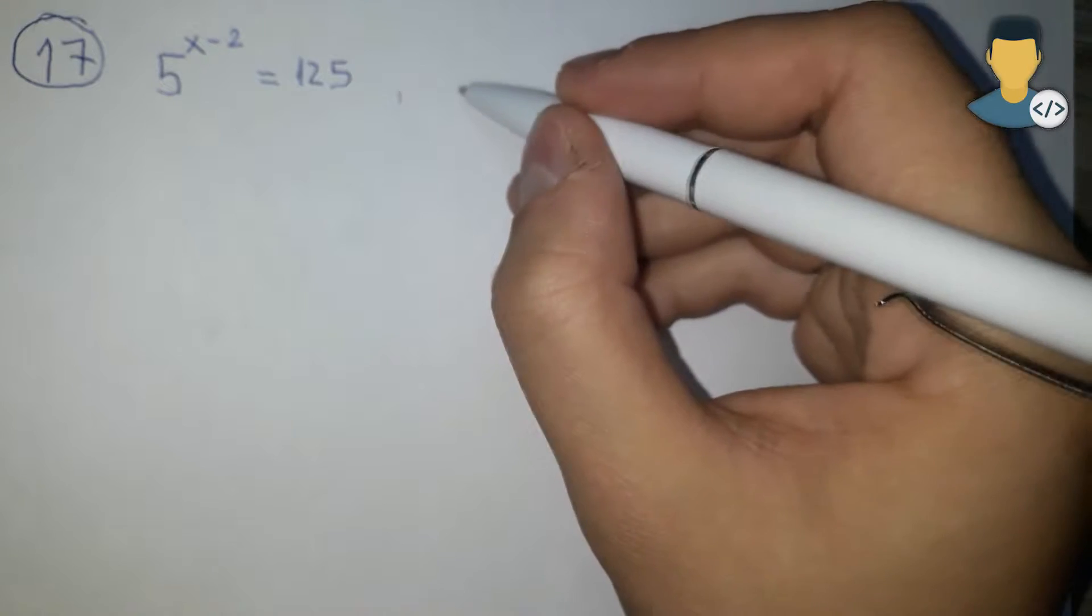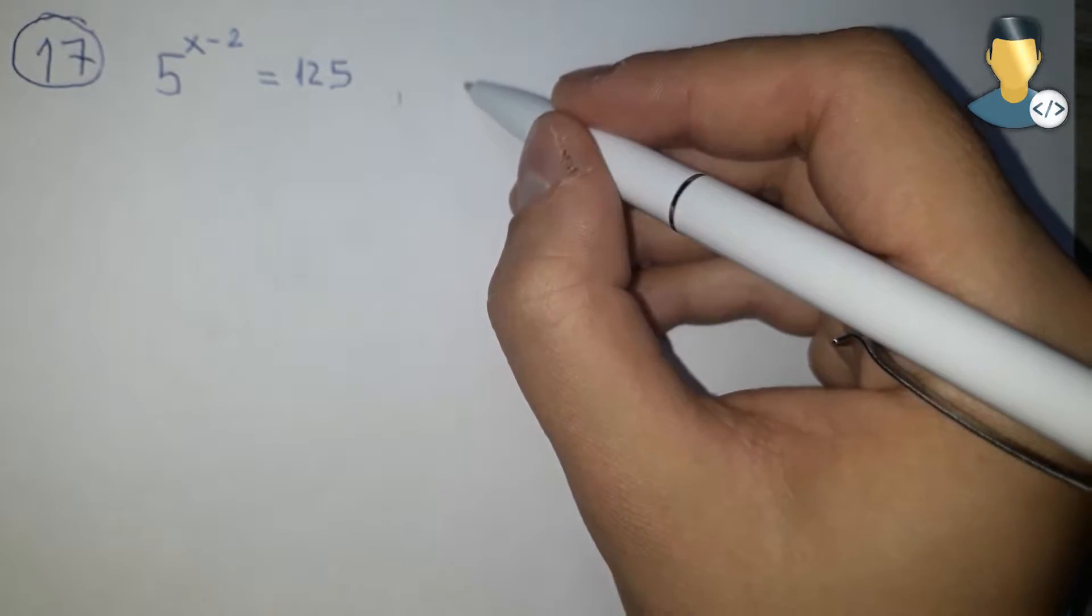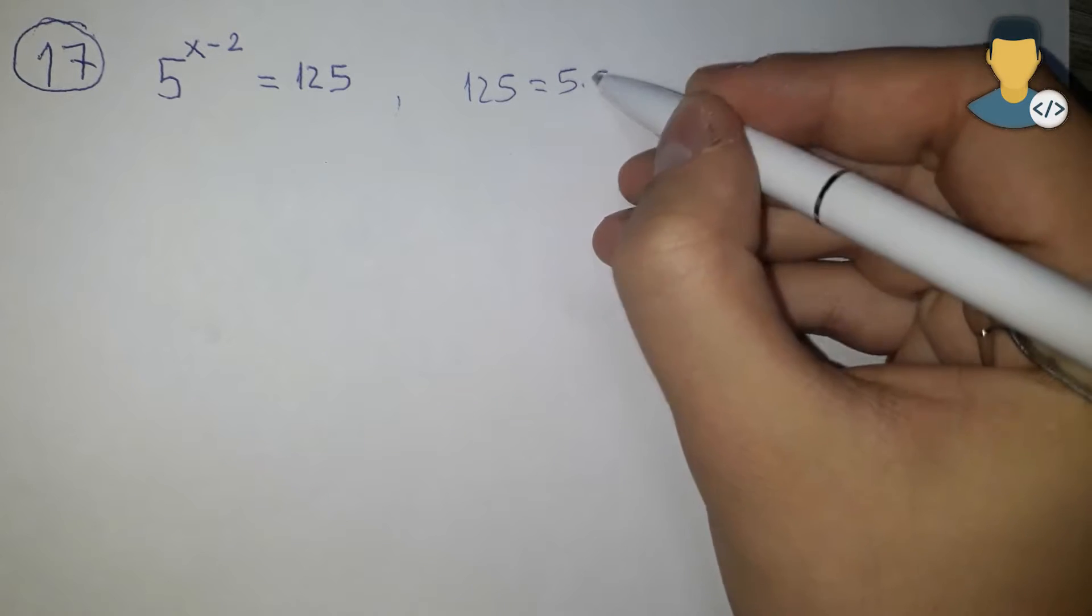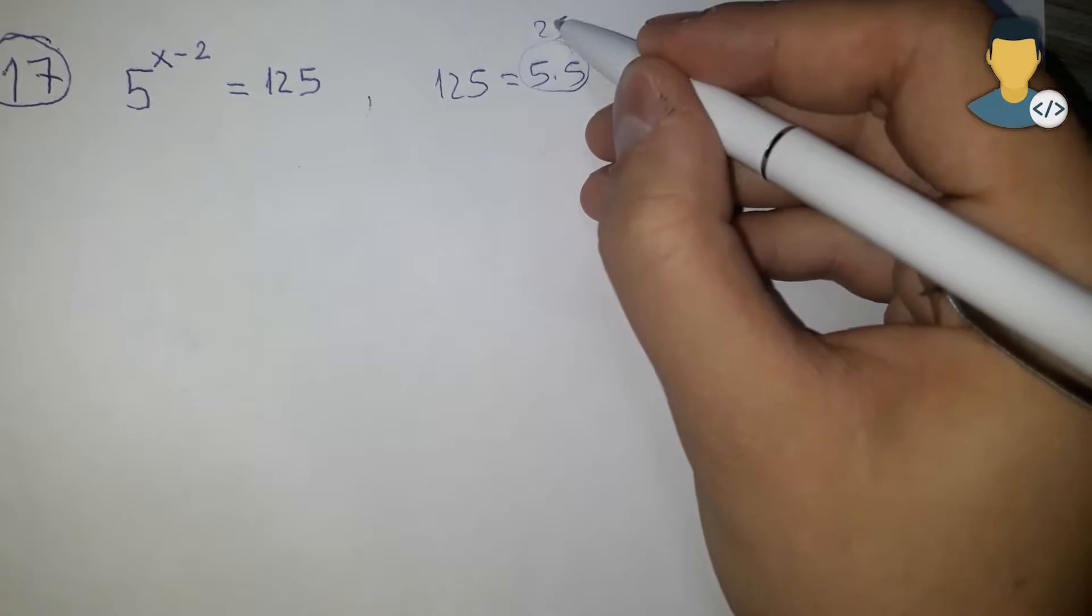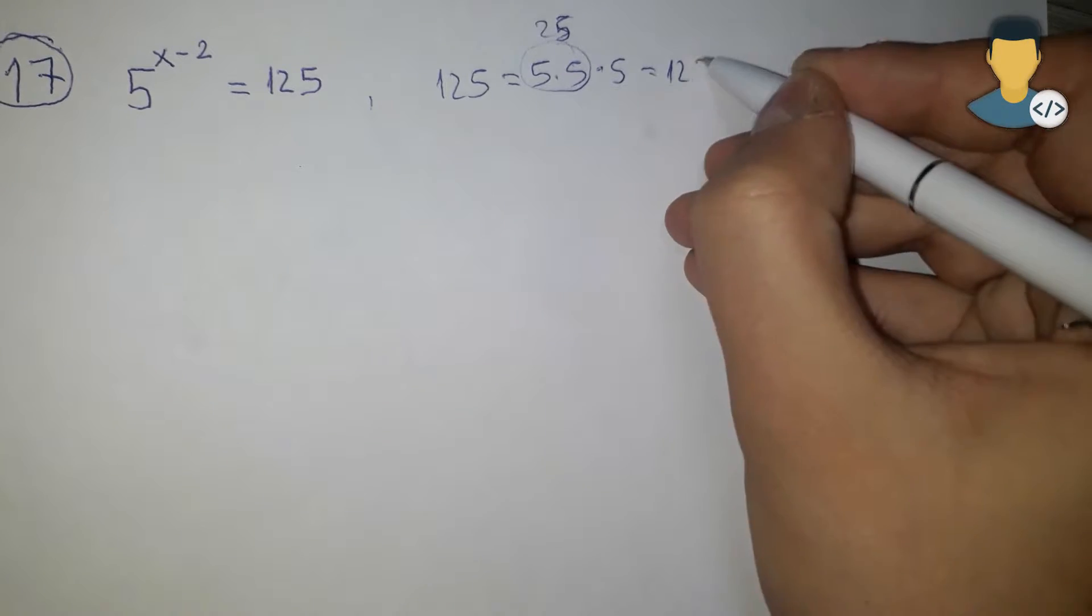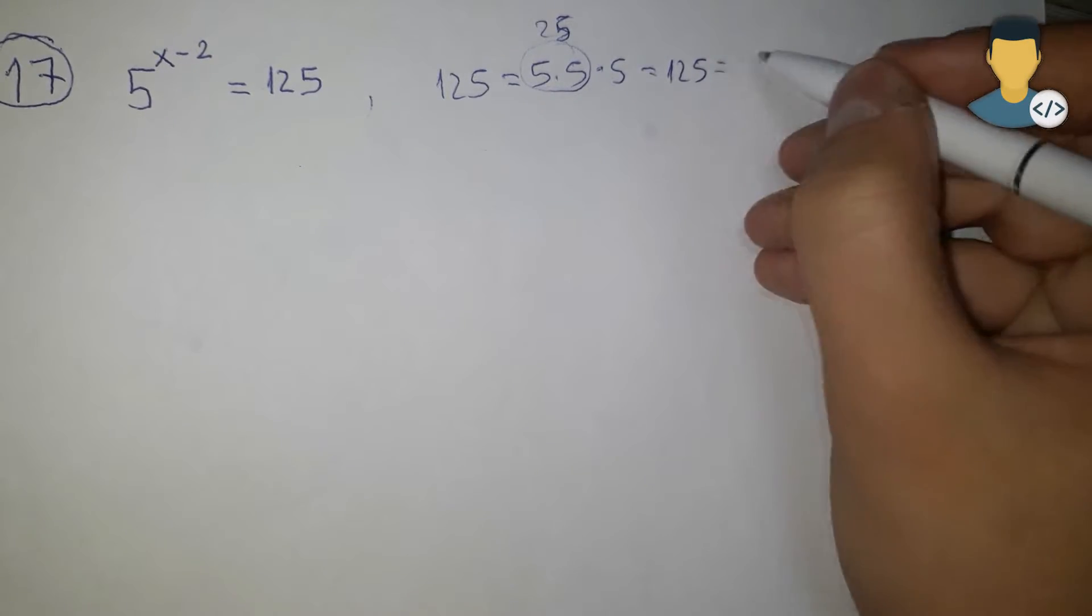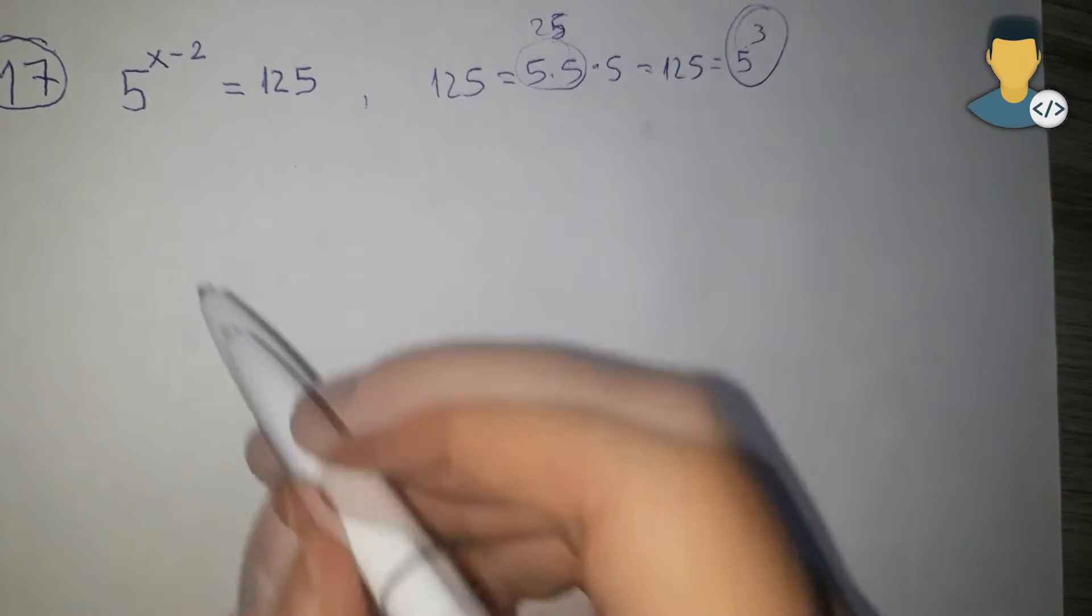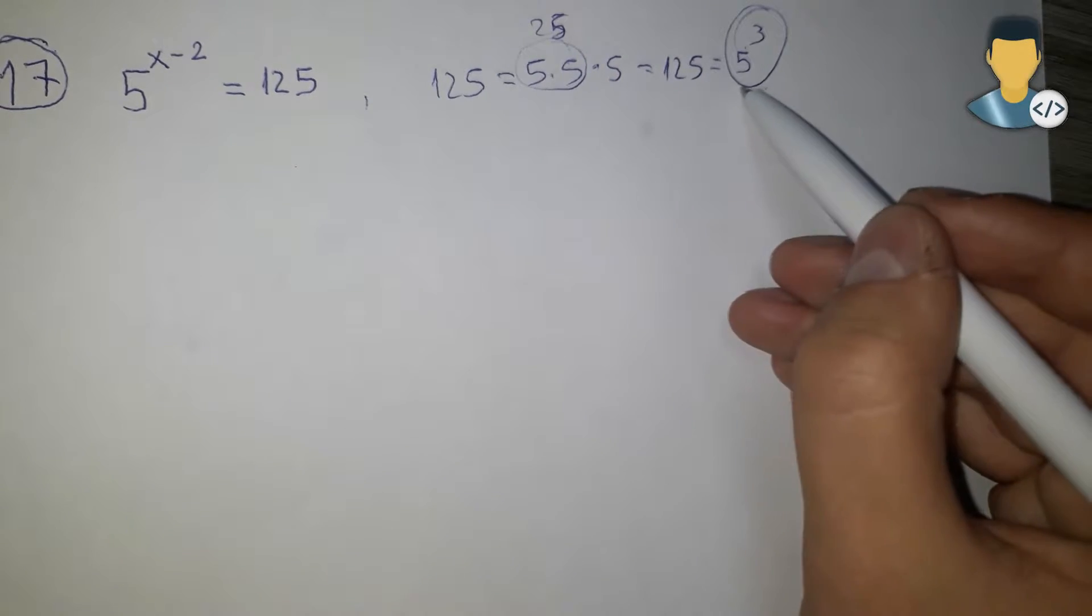125 we'll rewrite as 5 by 5, which is 25, multiplied by 5 is equal to 125. Or in other words, 125 is equal to 5 to the third. We did this because we want to make, if we can, the both sides have the same base.